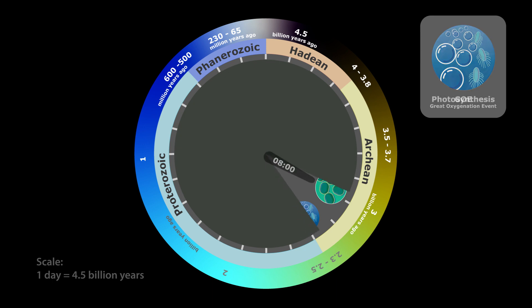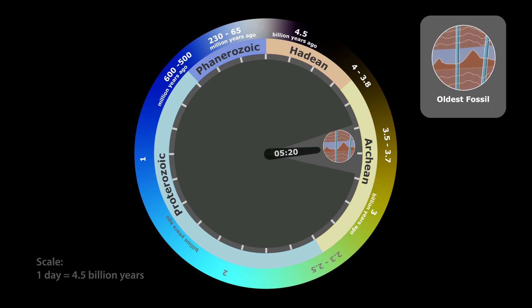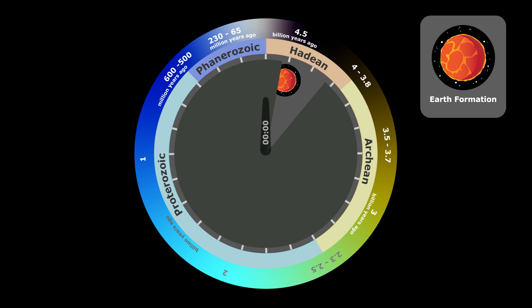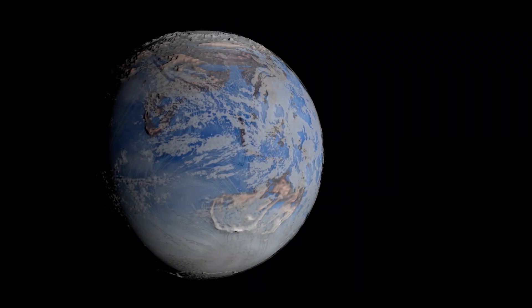However, if we roll the clock back to a much younger Earth when the first forms of life originated, we would find a very different planet to the one we have today. Once the surface cooled and water could condense into oceans, the early Earth may have resembled our world from a distance.